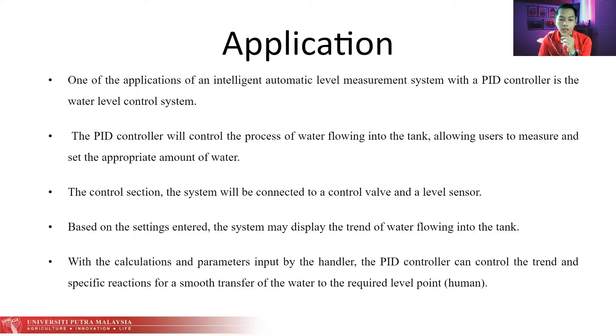For the application of this project, PID controls are widely used in industrial control processes nowadays. One of the applications of an intelligent automated level measurement system with a PID controller is the water level control system. The PID controller will control the process of water flowing in the tank and allow users to measure and set the appropriate amount of water. The control section will be connected to a control valve and a level sensor. The system may display the trend of water flowing in the tank, and with the calculation and parameters input, the PID control can control the trend for a smooth transfer of water to the required level point.